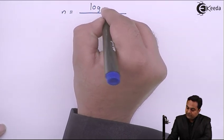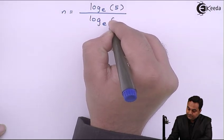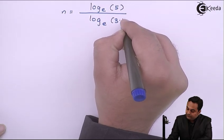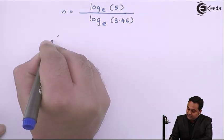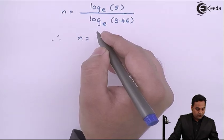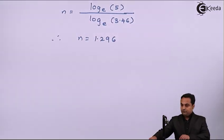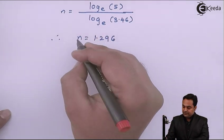n = log to the base e of 5 divided by log to the base e of 3.46, and from this the answer of n is 1.296, and this is the second answer.